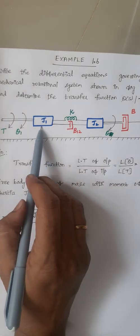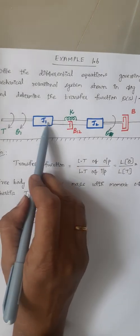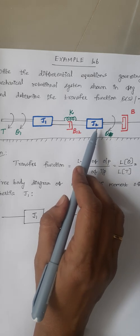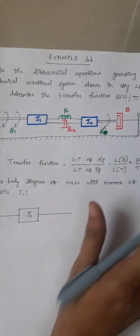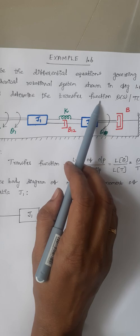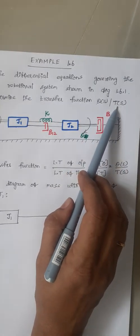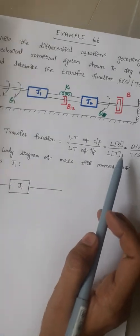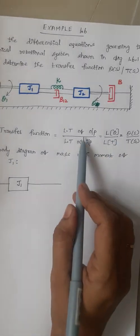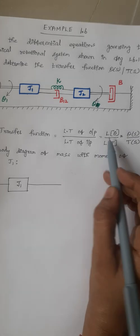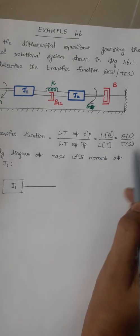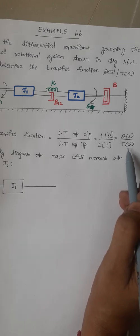From the problem, we have two masses j1 and j2, so we have to draw two free body diagrams. The transfer function is given directly as theta(s) by T(s), which is nothing but the Laplace transform of output divided by Laplace transform of input — that is, Laplace transform of theta divided by Laplace transform of T, equal to theta(s) by T(s). This is given directly in the problem itself.